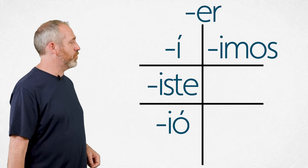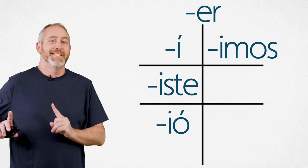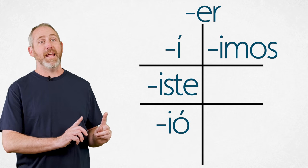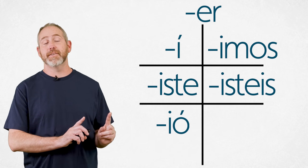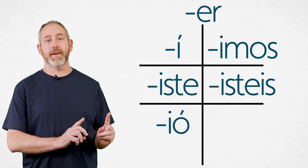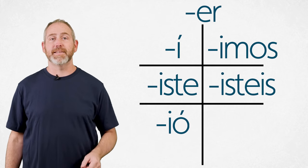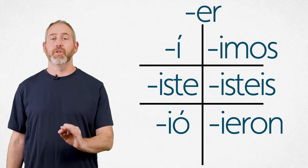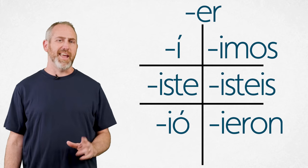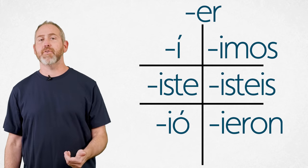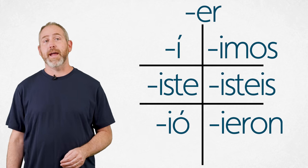Okay, now moving down to the vosotros form, we're going to take the tú form, slide it over, and we're going to add IS, iste, just like we did with dar and ver. All right, bottom right, we're going to have ieron. Ieron. So in AR verbs, it's aron. Now it's ieron. Kind of similar. Makes sense. All right.